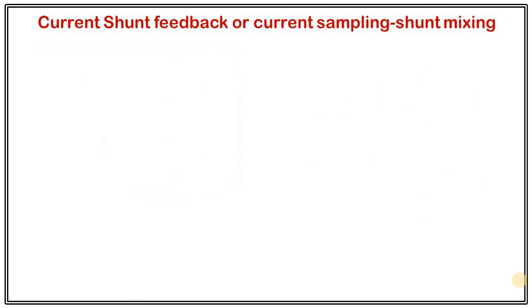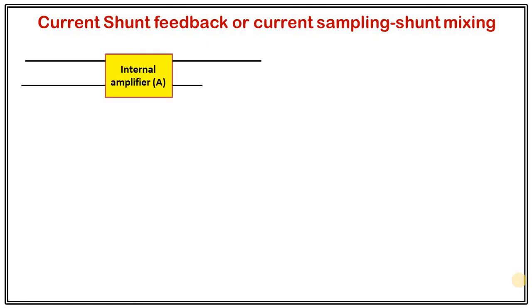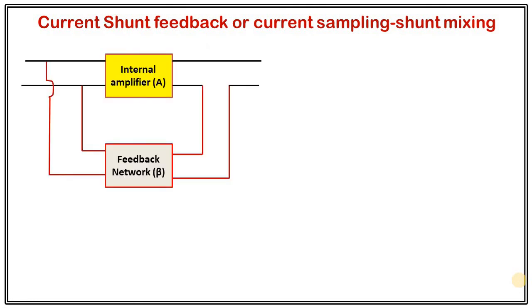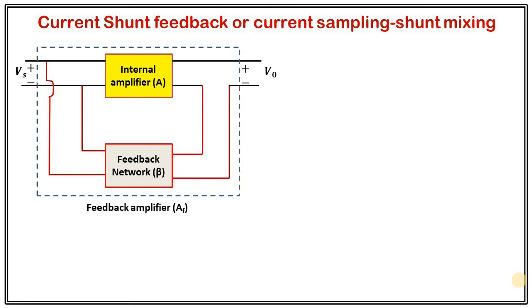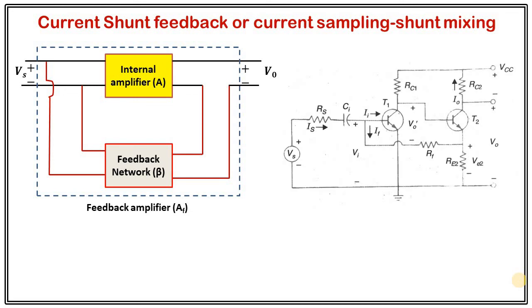The last topology is current shunt feedback. Here the internal amplifier has the feedback network connected in series at the output and in shunt at the input. Since the output connection is in series form, what we are sampling is current — as explained for the previous case. Since the input terminal is connected with the feedback network in shunt form, this is shunt mixing. So we call it current shunt feedback. A practical example of this circuit is also shown.